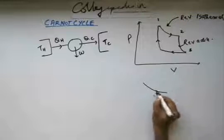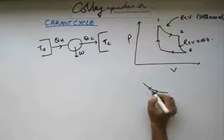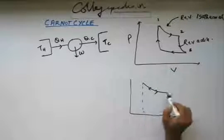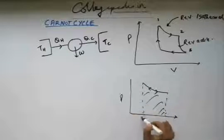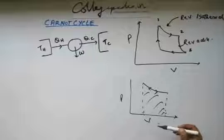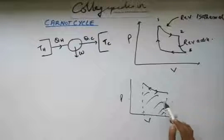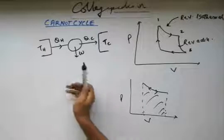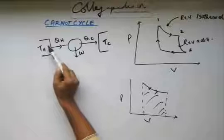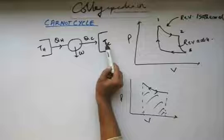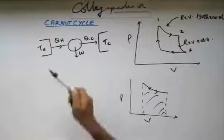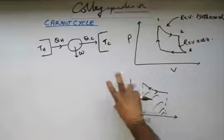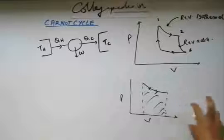If you expand through an isothermal process and then compress through an isothermal process, the graph would look like this and you'll have some work done on a pressure-volume axis. But the problem is that this does not fit with the cycle a heat engine goes through, because in a heat engine the gas takes heat from a source, does work in the engine, gives up heat to the sink, and moves back to the source. There are four steps involved, so two processes back and forth cannot model this heat engine.